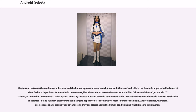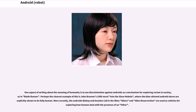Some android heroes seek, like Pinocchio, to become human, as in the film Bicentennial Man. Others, as in the film Westworld, rebel against abuse by careless humans. Android hunter Deckard in Do Androids Dream of Electric Sheep? and its film adaptation Blade Runner discovers that his targets appear to be, in some ways, more human than he is. Android stories, therefore, are not essentially stories about androids — they are stories about the human condition and what it means to be human. One aspect is to use discrimination against androids as a mechanism for exploring racism in society, as in Blade Runner. Perhaps the clearest example is John Brunner's 1968 novel Into the Slave Nebula, where the blue-skinned android slaves are explicitly shown to be fully human.